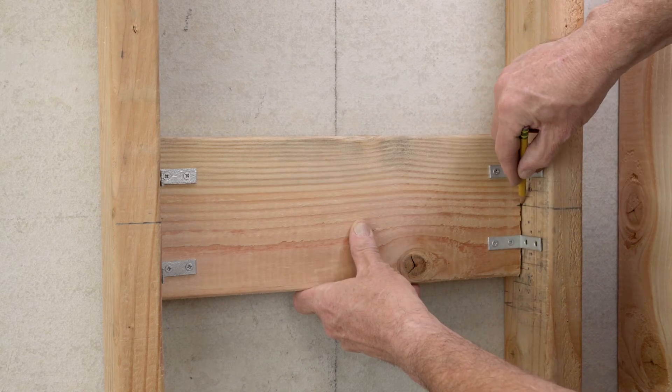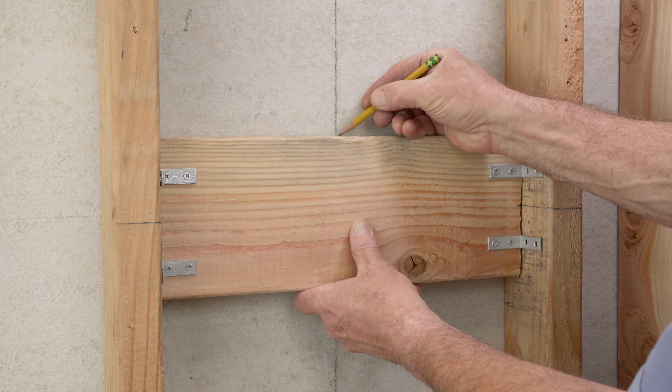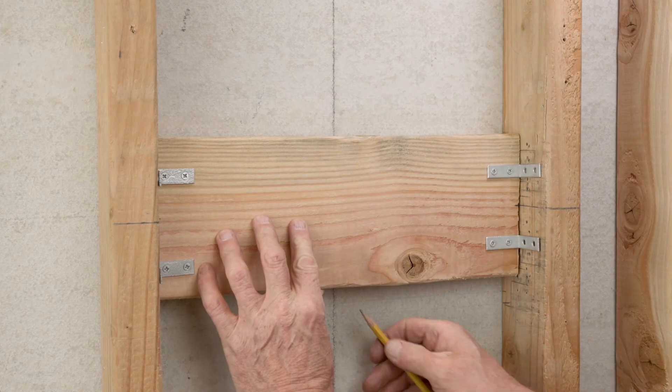Check for level and mark the valve center line to align with the vertical lines on the back wall and horizontal lines on the studs.